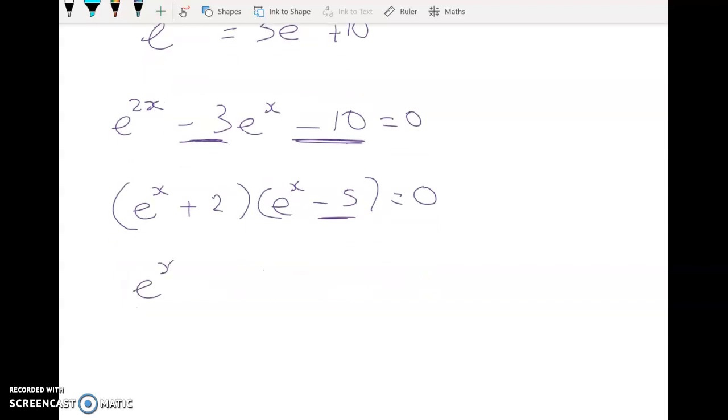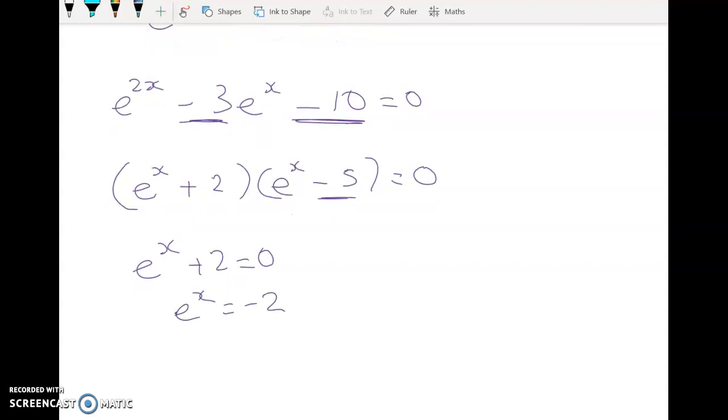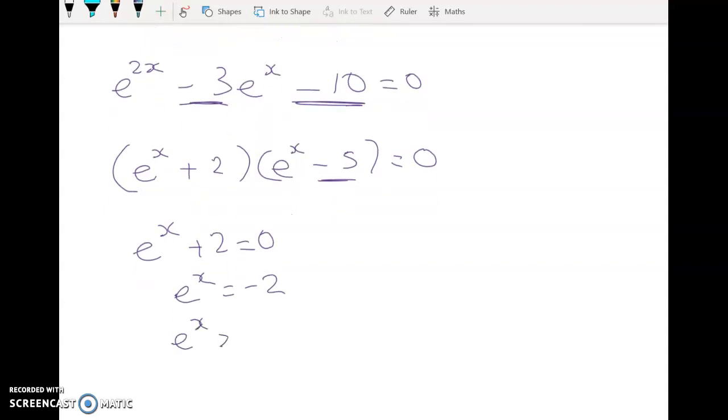OK, so two possible solutions. e to the x plus 2 is equal to 0. So there's no solutions to this, right? Because e to the x can't equal negative 2, because e to the x is always positive. So that's not a solution.